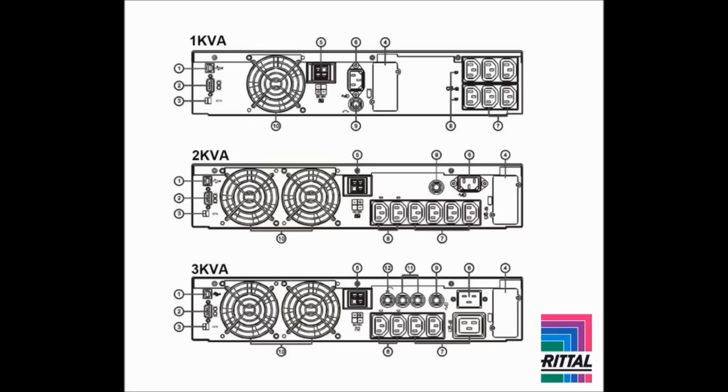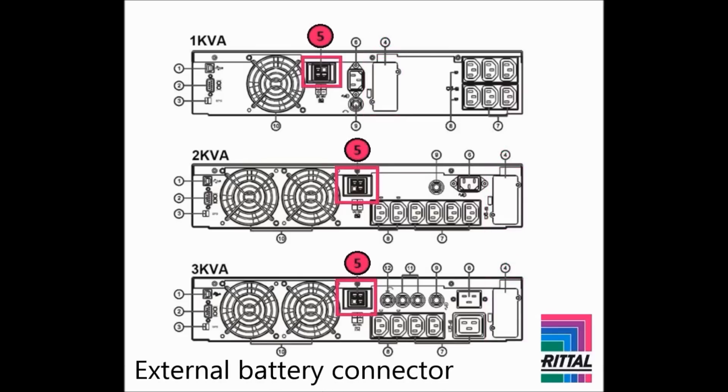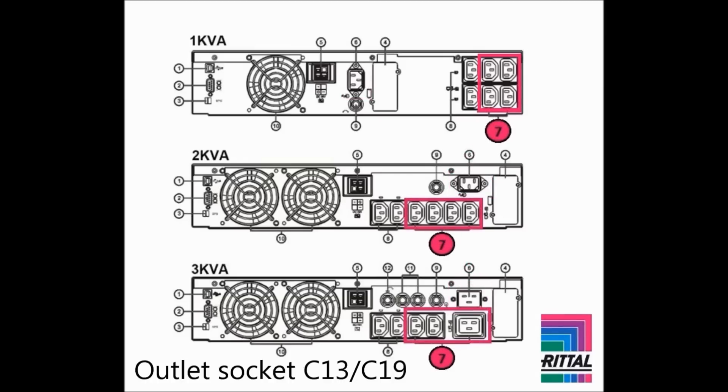The rear panel of the different PMC-12 models have some slight differences. You find a USB port for connecting the UPS to a PC. There is also an RS-232 port for serial communication. The emergency power off input allows dry contact signal inputs. An optional SNMP or relay card can be fitted in the communications card slot. External battery packs can be connected to the external battery connector. The AC power connection socket is used for connecting mains power to the UPS. A number of AC outlets are provided to connect equipment to be powered from the UPS.